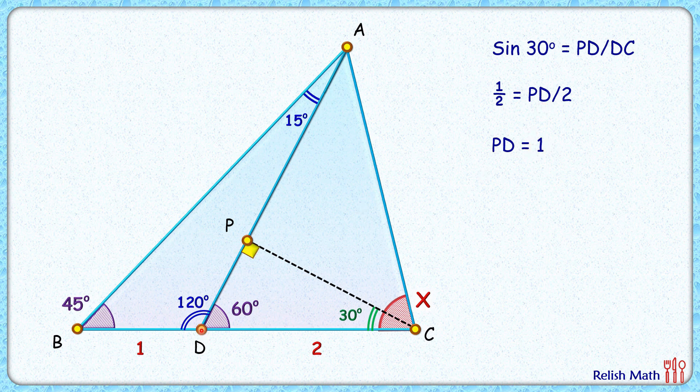So this length PD is 1 centimeter. Let's join PB. Now this triangle has got two sides that are equal, and thus opposite angles will also be equal - that is, this angle B and this angle P will be equal.